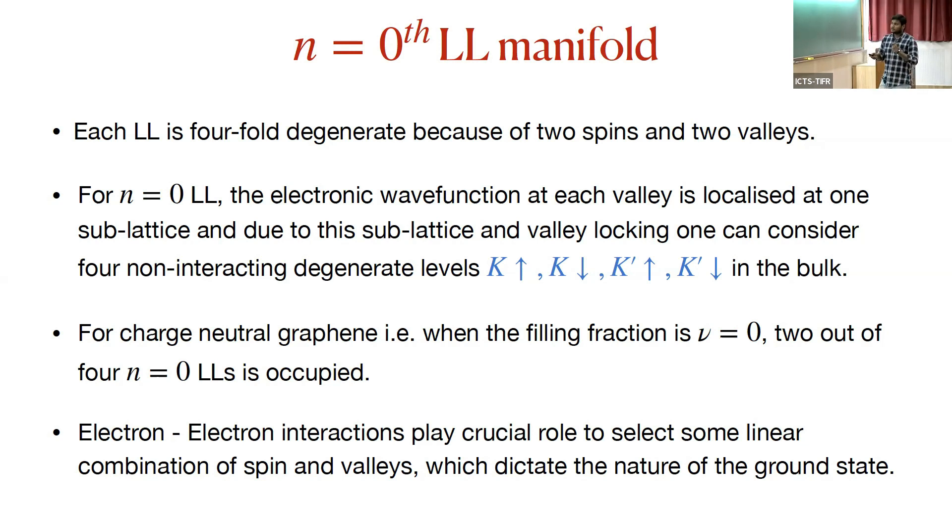One interesting property of n=0 Landau level is that if you calculate the electronic wave function at a particular valley, you will see that the wave function is localized on a particular sublattice, and you will get perfect locking between the sublattice and valley indices. If you specify a valley, it automatically says that your electrons are localized on a particular sublattice and zero in the other sublattice. You can construct the many-body Hilbert space using these four non-interacting degenerate levels.